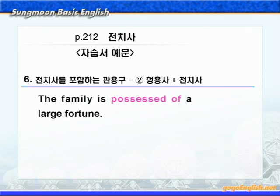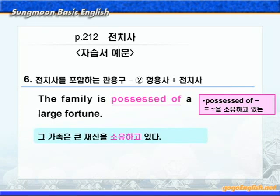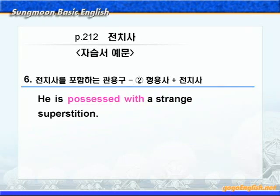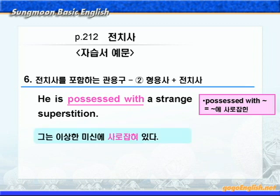다음을 보시죠. possessed of에 밑줄 쳐보세요. possessed of는 '뭐뭐를 소유하고 있는'이라는 뜻이고, 이 문장에 나와 있는 fortune은 '운'이 아니고 '재산'이라는 뜻이니까, '그 가족은 큰 재산을 소유하고 있다'가 됩니다. 이번엔 possessed with에 밑줄 쳐야겠죠? possessed with는 '뭐뭐에 사로잡힌'이라는 뜻입니다. superstition은 '미신'이라는 뜻이니까, '그는 이상한 미신에 사로잡혀 있다'가 됩니다.